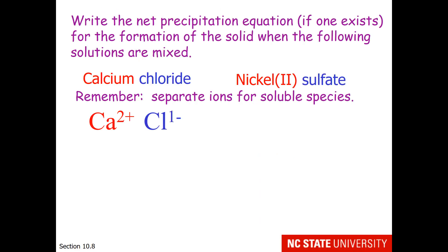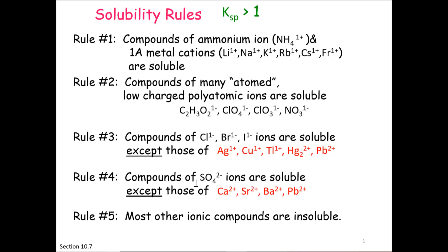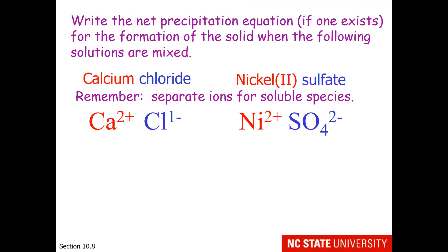Nickel 2 sulfate. This would dissolve into nickel 2+ and sulfate 2-. This would fall under rule 4. Compounds of sulfate ions are soluble, and nickel 2 is not one of our exceptions. So now it's time to consider what combinations might interact.